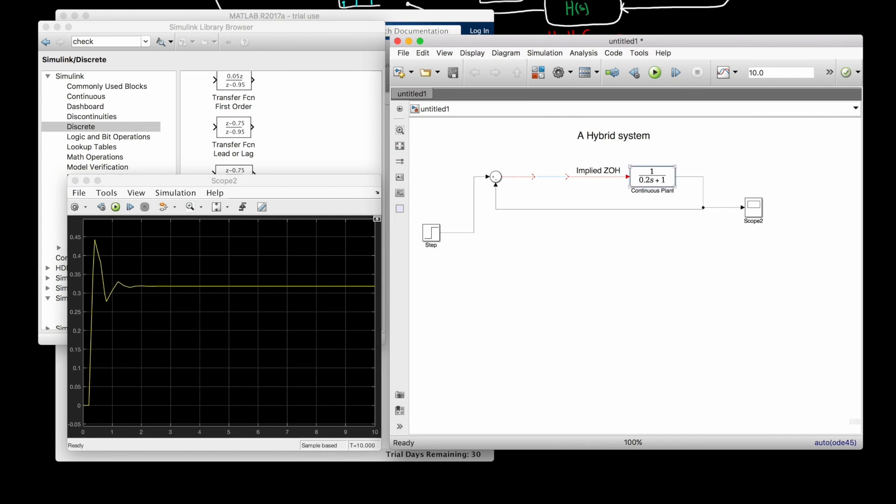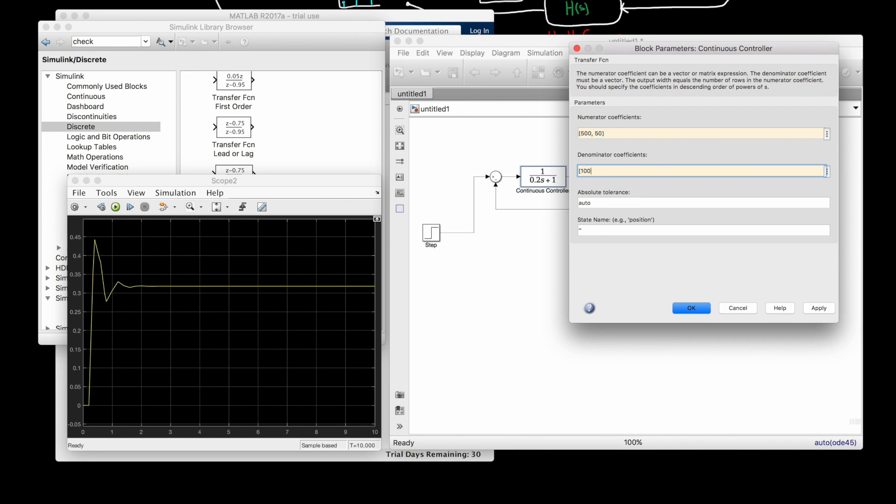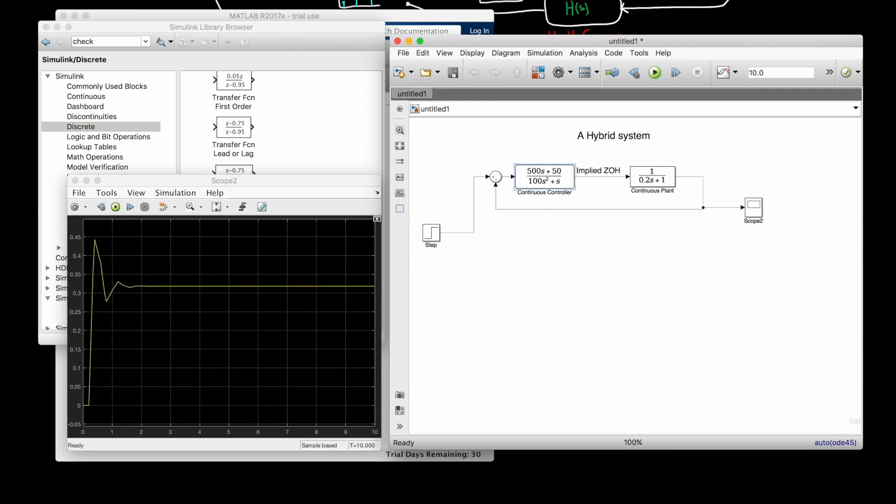If we replace the discrete transfer function with a continuous transfer function, then the entire model, of course, is continuous, and the zero-order hold goes away. You don't need a zero-order hold with a continuous system. Therefore if you design a continuous controller with this model, it won't take into account the delay from the hold. And when you discretize it, it will be less stable than you intended because of that.